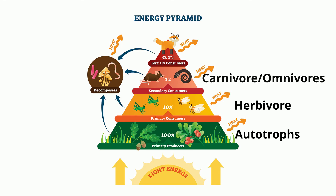Carnivores and omnivores are found next because they eat herbivores. These organisms are also called secondary consumers. And finally, the top of the pyramid is occupied by the top consumers called tertiary consumers, which eat secondary consumers.